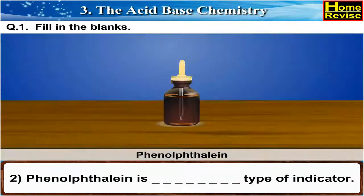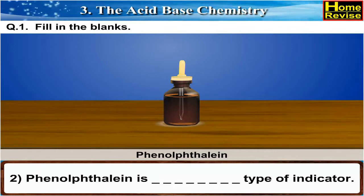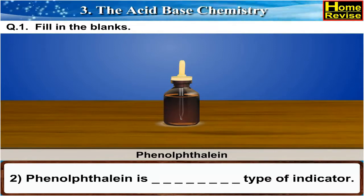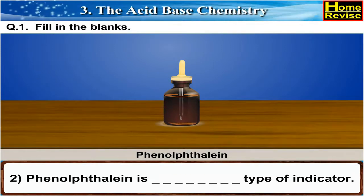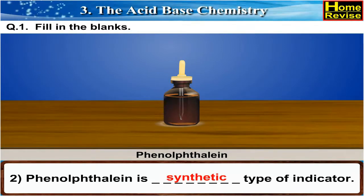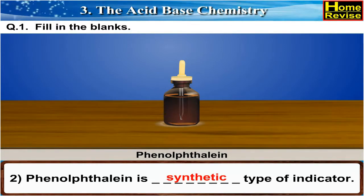Question 2. Phenolphthalein is a synthetic type of indicator.